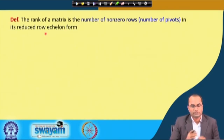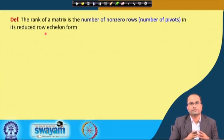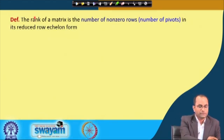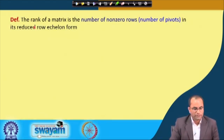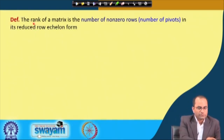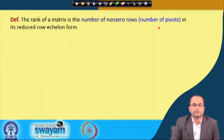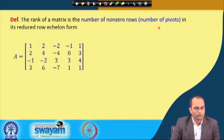The reduced row echelon form is very important — it tells us a lot about the matrix. Rank is one important concept used in various applications, and the rank of the matrix is the number of pivots which we see in our reduced row echelon form.